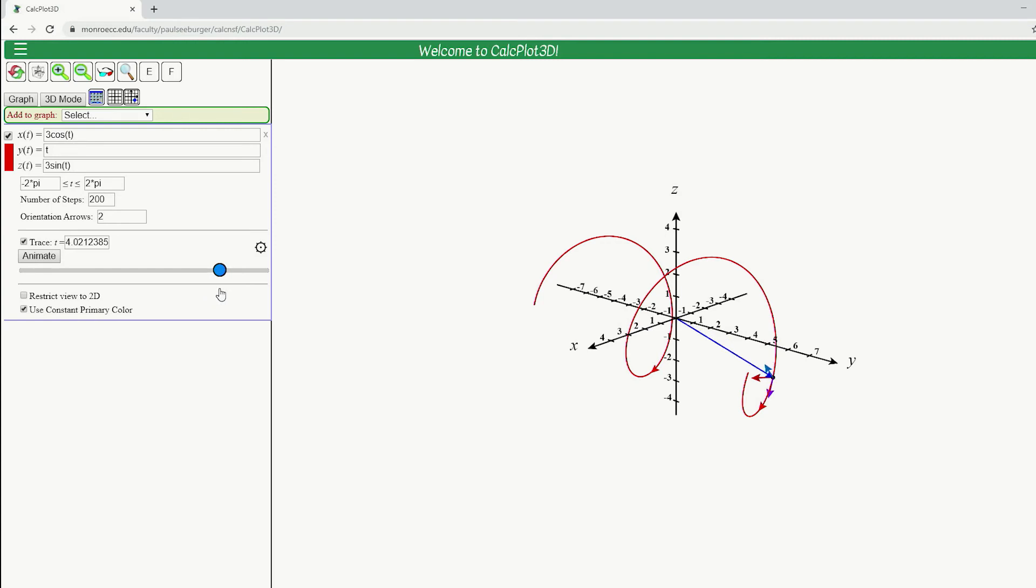So we talked about in a prior video that this TNB frame in some sense is sort of like a traveling coordinate system. These are all one unit long. And so thinking about this scale on our axes here, one unit long. And I've got a tangent vector in the direction of motion, my normal vector perpendicular to that on the concave side of the curve, and then that B vector as that cross product.